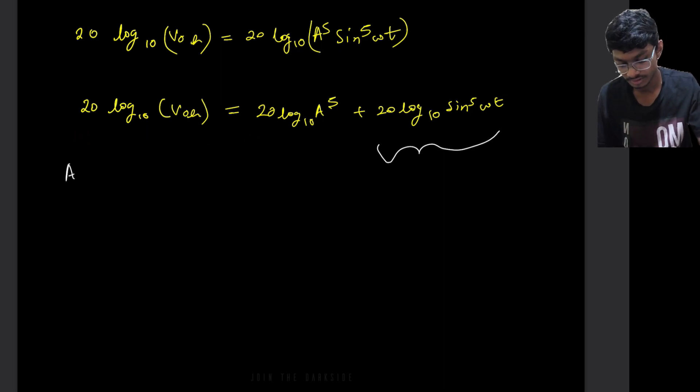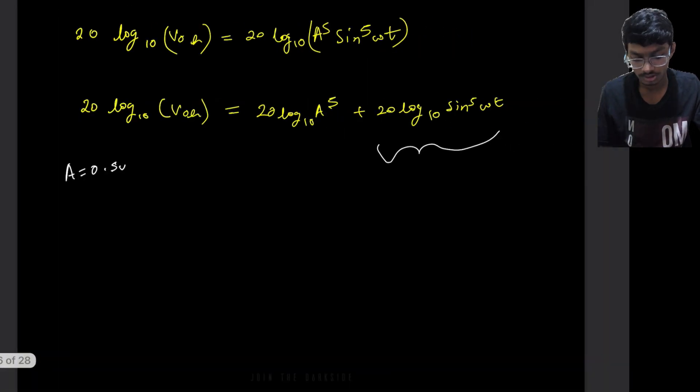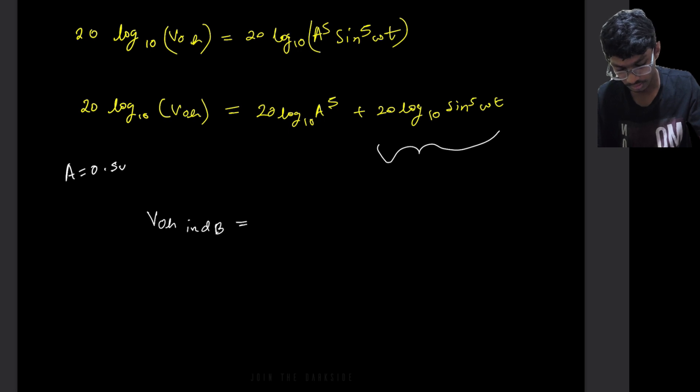Now we have already been given A is equal to 0.5 volts as can be seen from the question here. A is 0.5 volts. So if we calculate the output of VO in dBs which is equals to 5 times 20 log base 10 of 0.5,